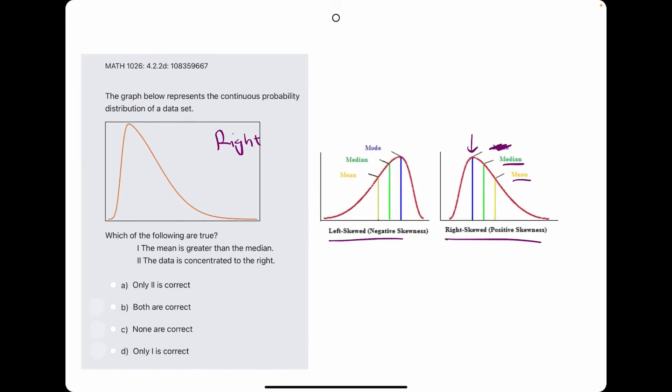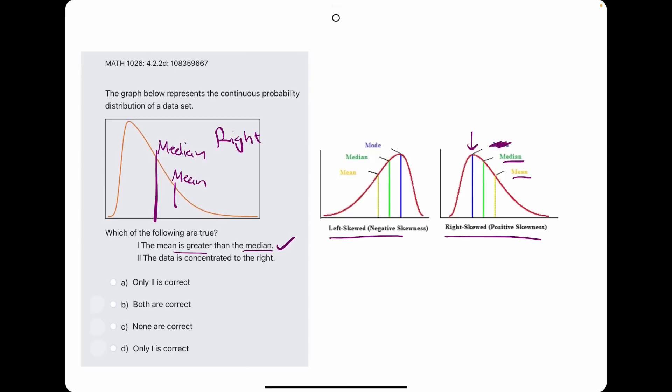Which means the median will be further to the left while the mean is towards the right. So, in this case, they say the mean is greater than the median. Greater, in this case, just means further to the right than to the left. So they're saying the mean could be like here, it's greater than this over here, the median. And so this is a true statement.